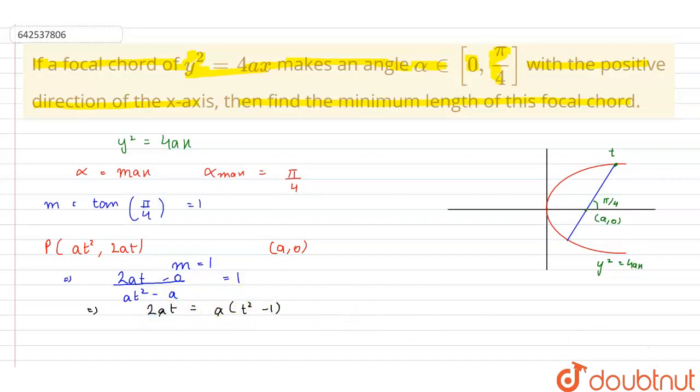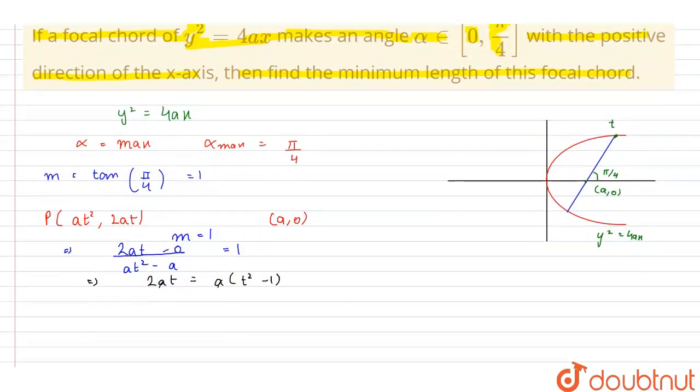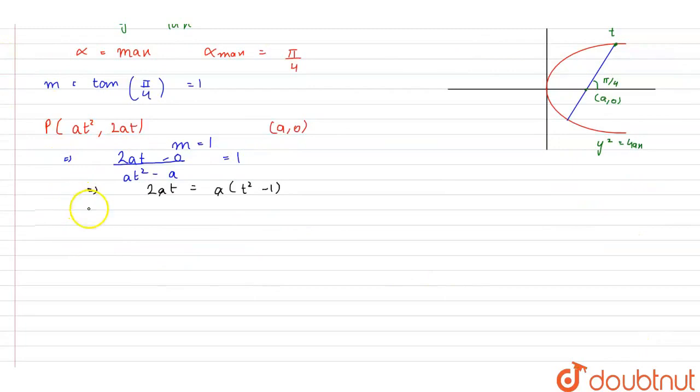we get 2at is equal to a into t²-1. So, cancelling out a, we get a quadratic equation in t,